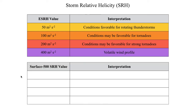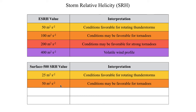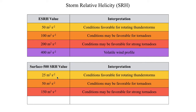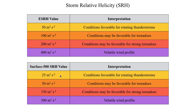Covering values from the recent research publication: surface to 500 meter SRH values above 25 meters squared per second squared typically signal an atmosphere favorable for rotating thunderstorms (supercells). Values above 50 meters squared per second squared signal conditions favorable for tornadoes — a much better predictor than past metrics. A value above 150 meters squared per second squared is when you might start worrying about strong tornadoes if supercells are present. If you see a surface to 500 meter SRH value over 300, it's pretty unusual to have wind shear this intense in a warm, moist, unstable air mass — but if you do, get ready for a rough ride potentially.